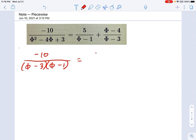Okay, so I'm going to keep on writing here. 5 over phi minus 1, and plus phi minus 4 over phi minus 3. And let's just move this guy over a little bit. I want to have room for what we need to do next.